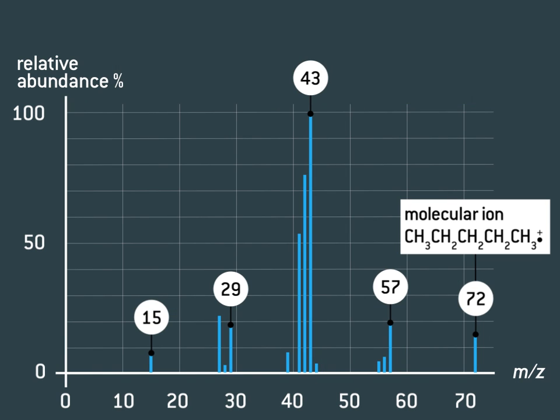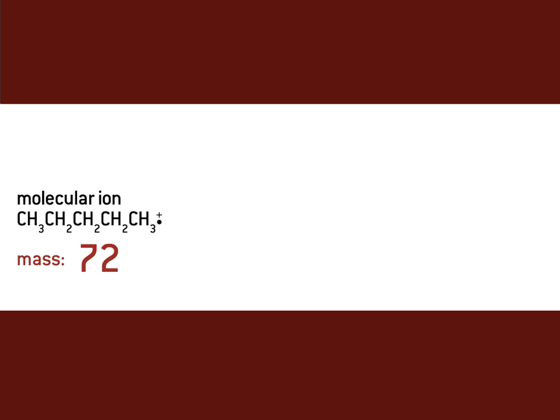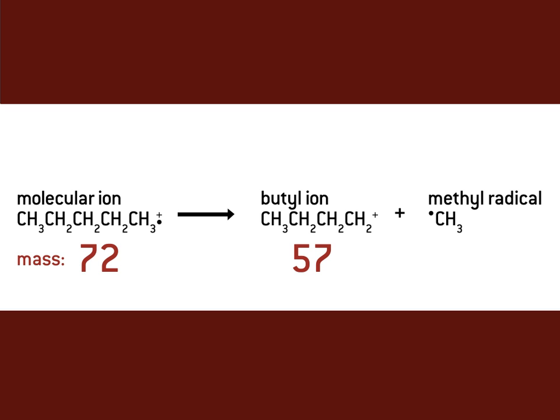Let's take a look at the tallest peak next. If we examine the pentane molecule, we can work out which bond could have broken to create the fragment causing this peak. Could this splitting have produced a peak at 43? No, because the butyl fragment has a mass of 57, and the methyl fragment has a mass of 15.